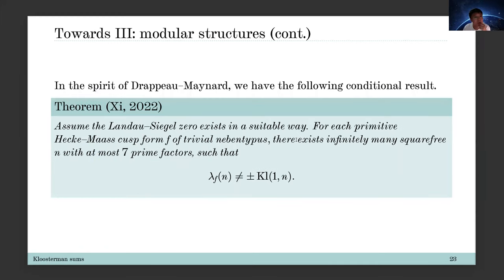Following the spirit of that work, we can give another conditional result. If we are allowed to assume the existence of Landau-Siegel zeros in a certain way, we can reduce the constant 100 to seven.